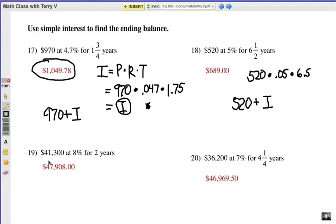Number 19, you're going to do the 41,300, that's your principal. That's going to be .08, and then times 2. So multiply those three numbers together. You're going to add that back on to 41,300. There's your answer.